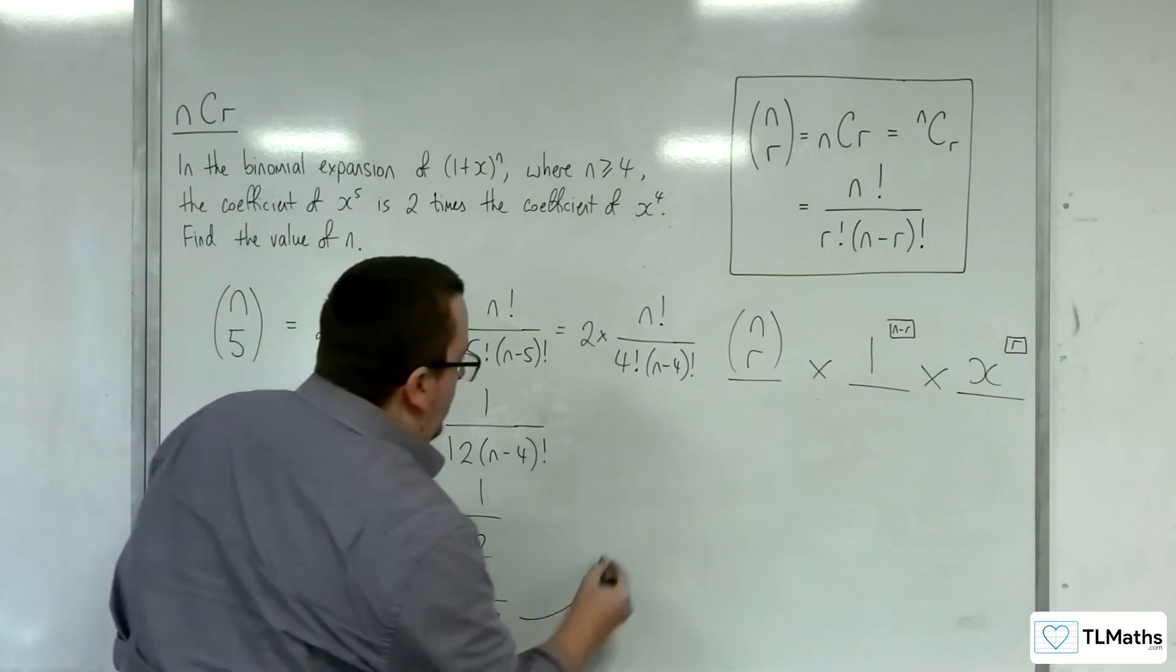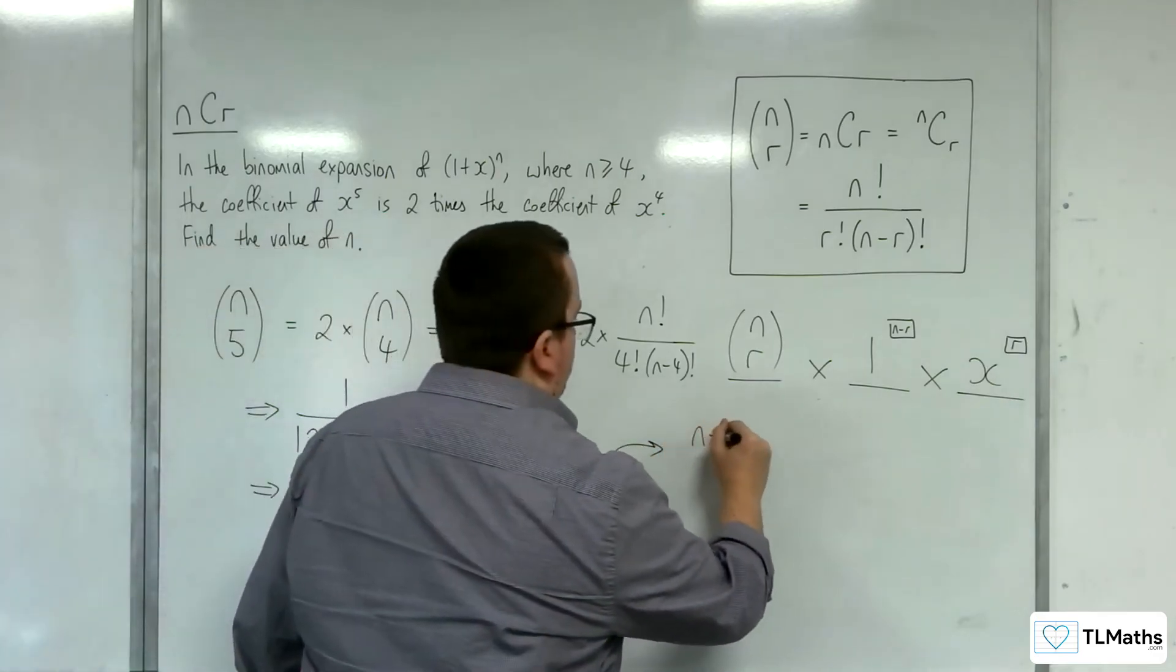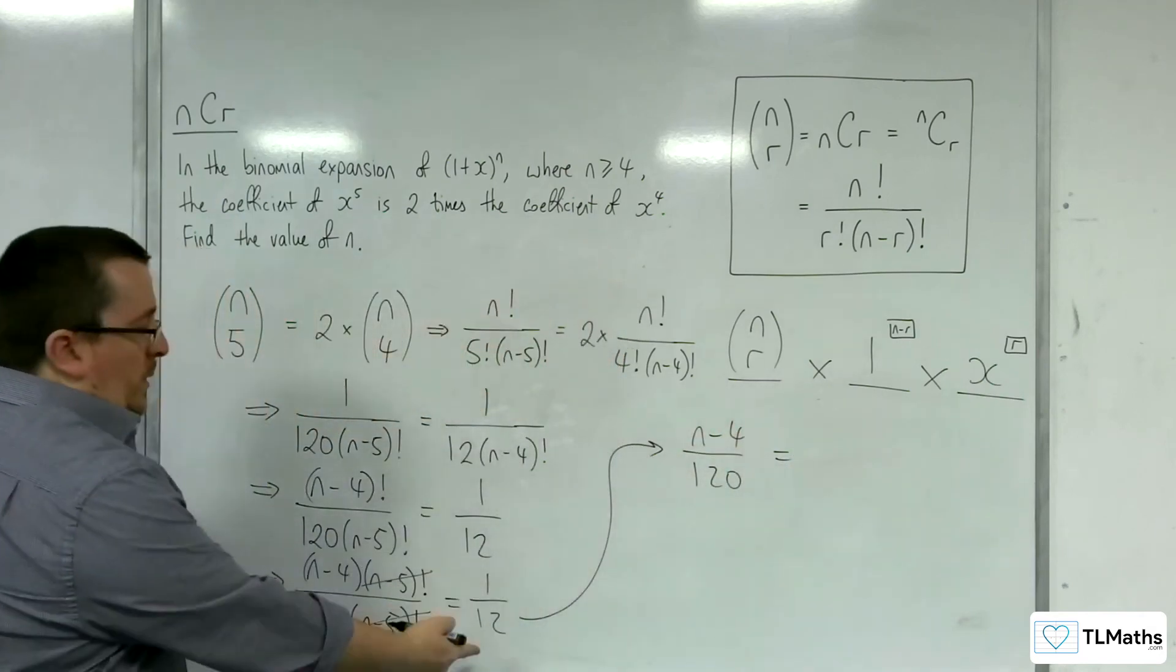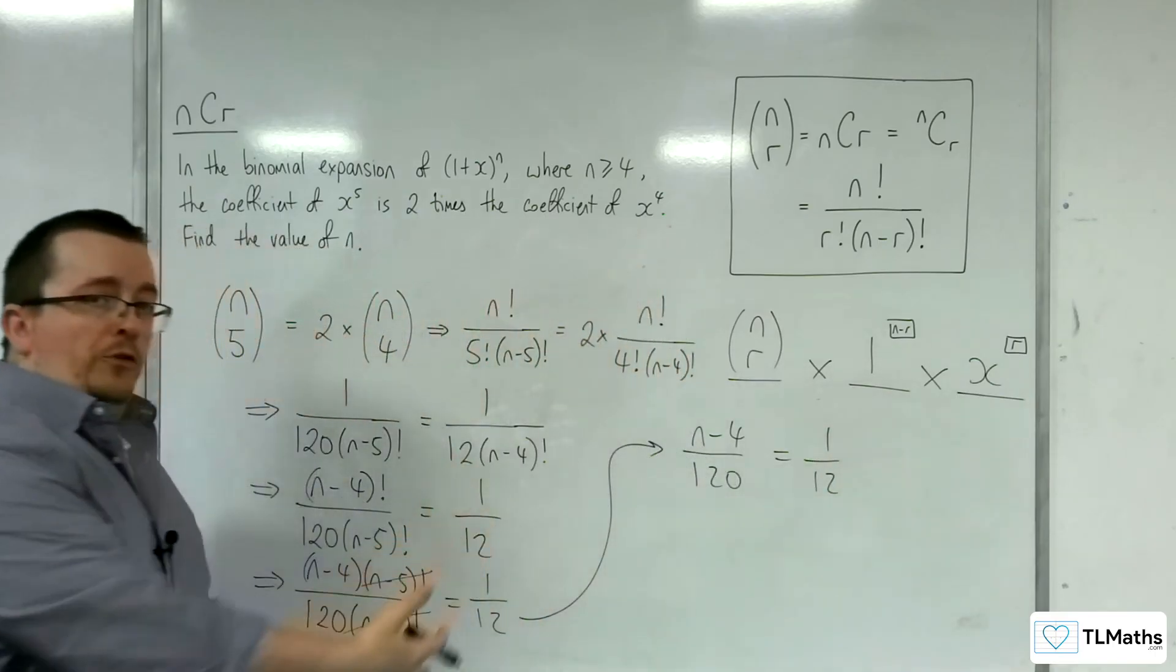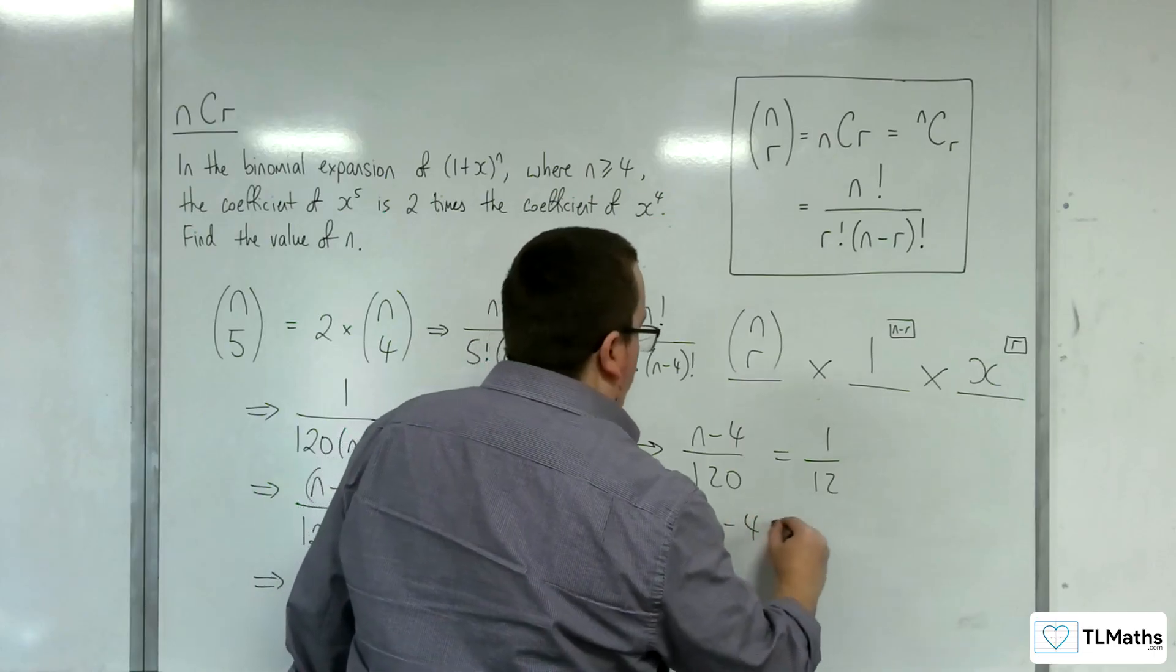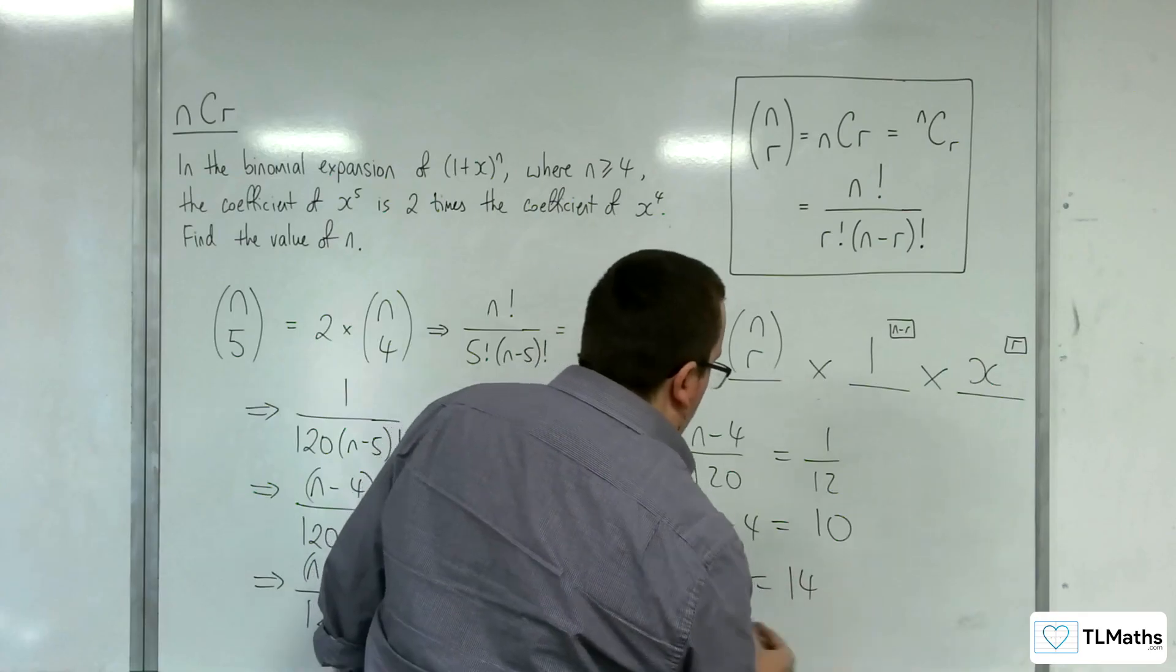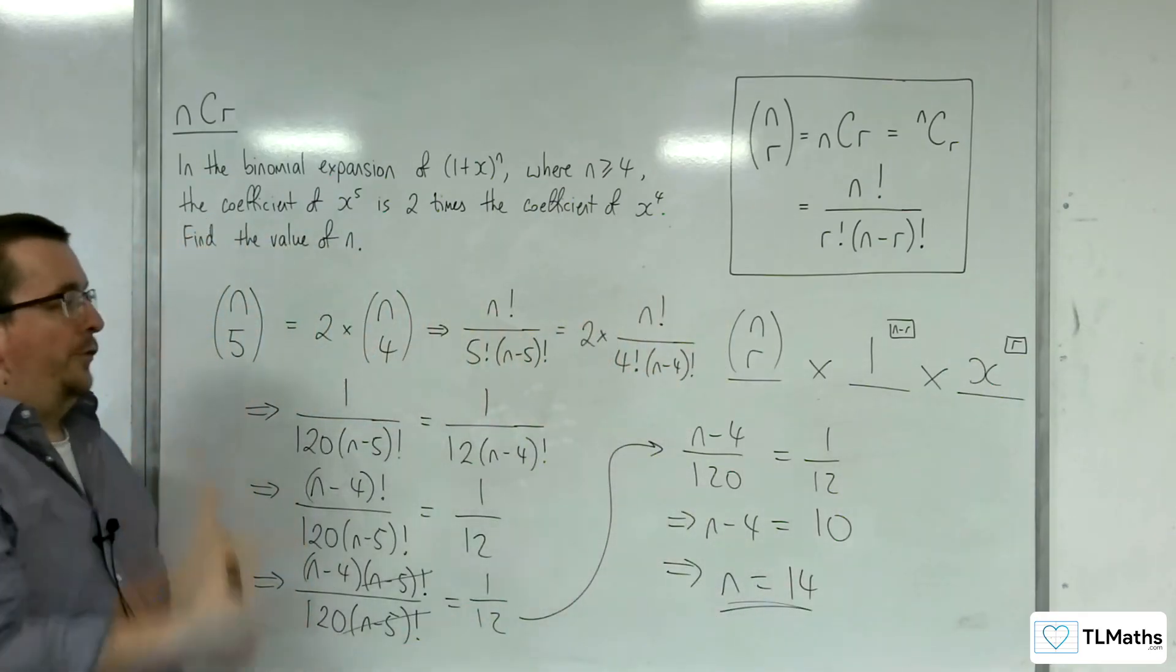So solving that, I'm going to be left with n take away 4 over 120, is equal to 1 over 12. So then multiply both sides by the 120, so n take away 4 is equal to 10, and then add 4 to both sides. So n would have to be equal to 14. And that solves the problem.